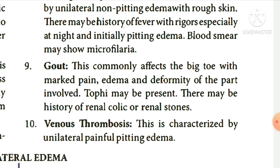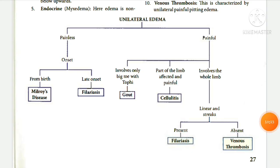Gout commonly affects the big toe with marked painful edema and deformity of the part involved. Tophi may be present. There may be a history of renal colic or renal stone. Venous thrombosis is characterized by unilateral painful pitting edema. Summary of unilateral edema: causes include Milroy's disease, filariasis, gout, cellulitis, and venous thrombosis.